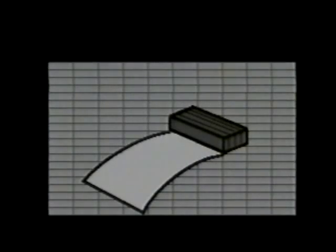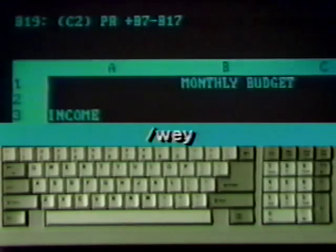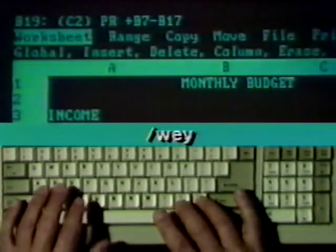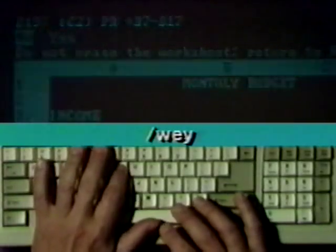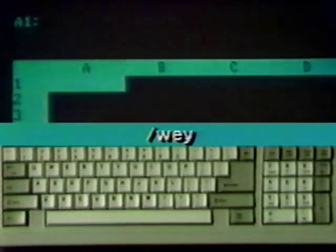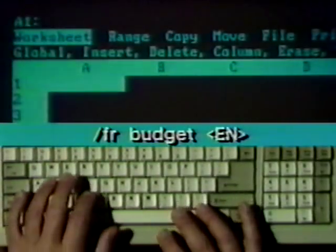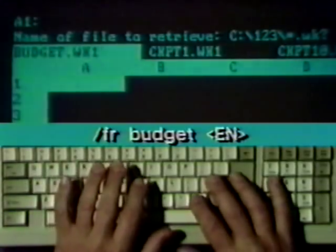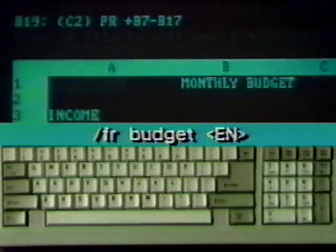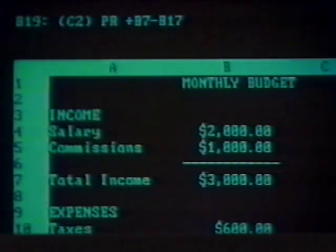The file retrieve command calls up a spreadsheet from the disk. To demonstrate a retrieve, Libby will erase the current spreadsheet. The keys are slash W, E, and Y. To retrieve a file, type slash F and R and a prompt appears. Then press Enter. The spreadsheet is read from disk into memory and displayed on the monitor.